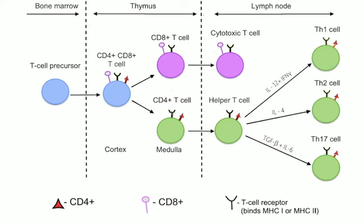A different population of T-cells, the CD4+ T-cells, function as helper cells. Unlike CD8+ killer T-cells, these CD4+ helper T-cells function by indirectly killing cells identified as foreign. They determine if and how other parts of the immune system respond to a specific perceived threat.